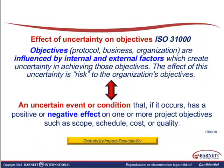Another definition comes from the Project Management Institute's Project Management Book of Knowledge. The PMI is a well-known global organization with standards for project management, and many of you may be certified project managers through the PMI. Their definition: an uncertain event or condition that, if it occurs, has a positive or negative effect on one or more objectives such as scope, schedule, cost, or quality. A project risk can impact your outcome in a positive or negative way, and I will give you an example of a positive risk in a few moments.